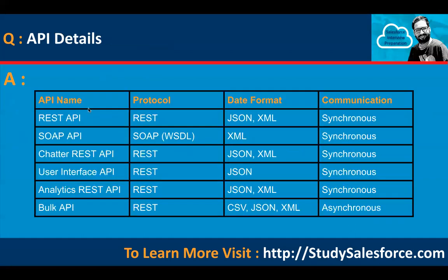Next is API details. For REST API: protocol REST, data format JSON and XML, communication synchronous. For SOAP API: protocol SOAP, uses WSDL file, data format XML, communication synchronous. For Chatter REST API: protocol REST, data format JSON and XML, communication synchronous. For User Interface API: protocol REST, data format JSON, communication synchronous.